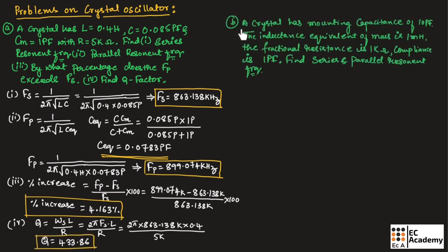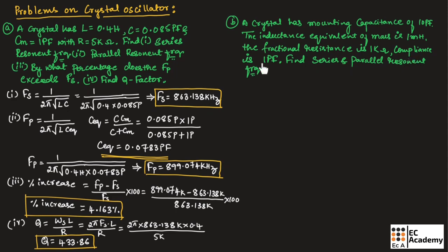Now let us consider the second problem. A crystal has a mounting capacitance of 10 picofarad. The inductance equivalent of mass is 1 millihenry. The fractional resistance is 1 kilo ohm. Compliance is 1 picofarad. Find the series and parallel resonant frequency. So, the mounting capacitance Cm equals 10 picofarad, inductor L equals 1 millihenry, resistance R equals 1 kilo ohm, and compliance C equals 1 picofarad.